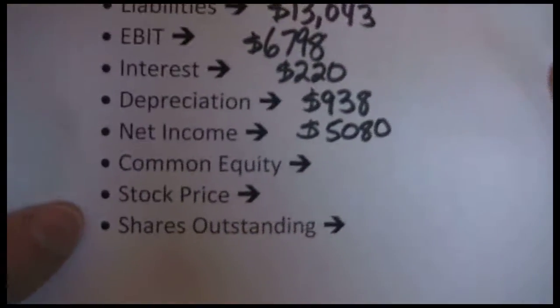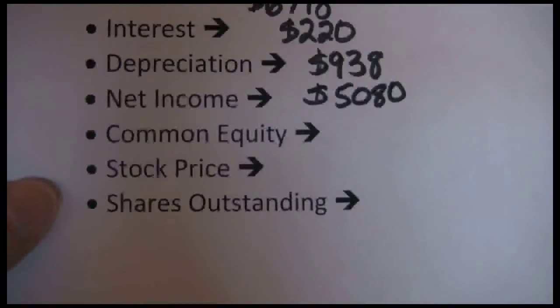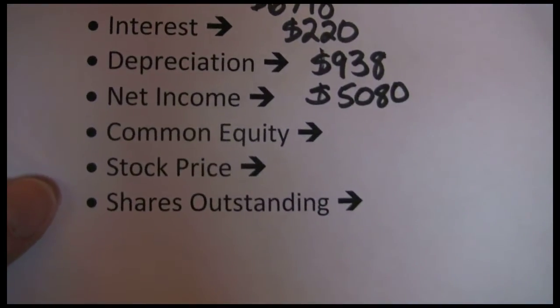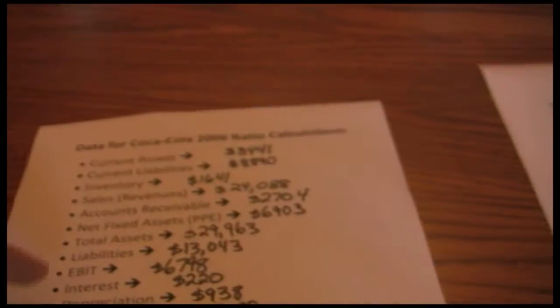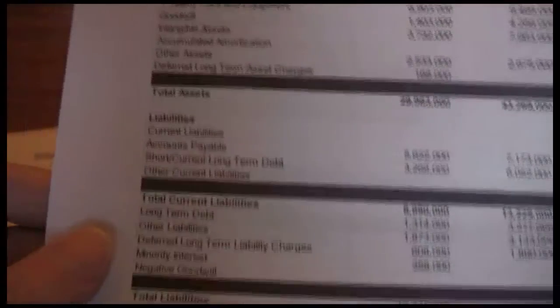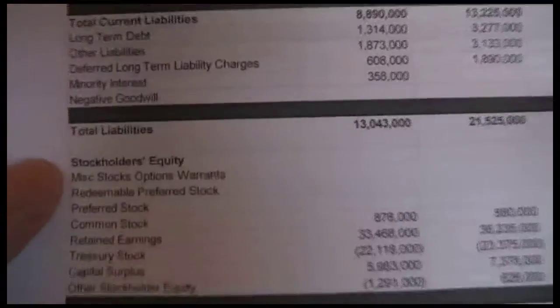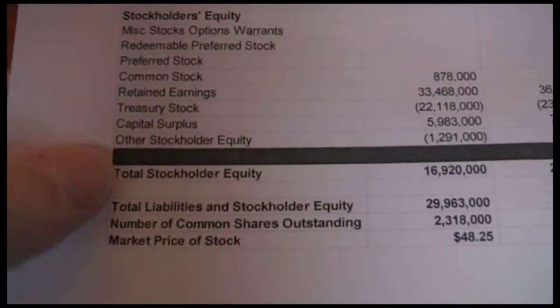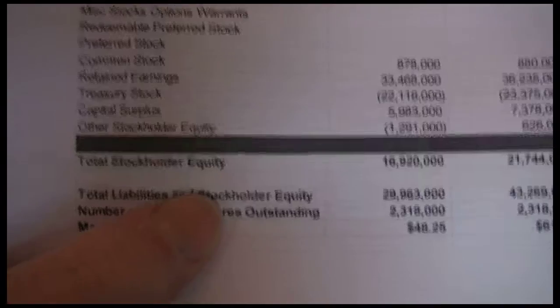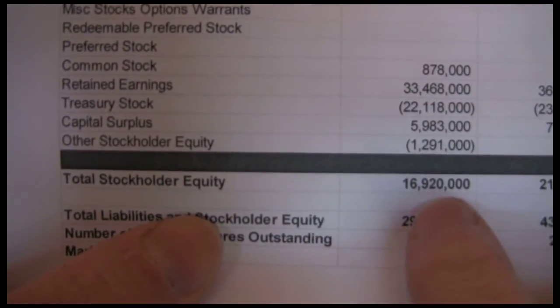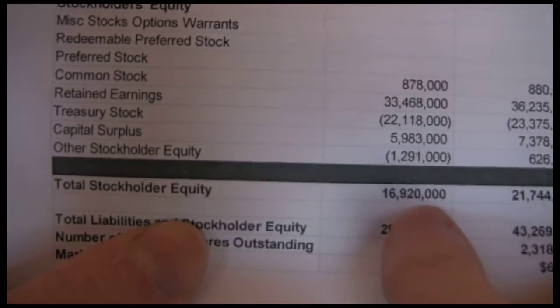Just a few items left. Common equity is the stockholders' equity, and that's going to be available on the balance sheet. Flipping back to Coca-Cola's balance sheet, near the bottom there's a section called stockholders' equity which breaks it down into various segments. What we want is the total stockholders' equity at the bottom — that's $16,920.